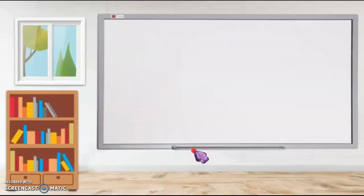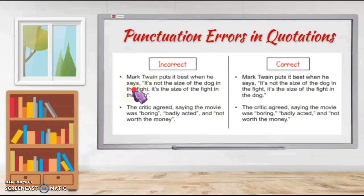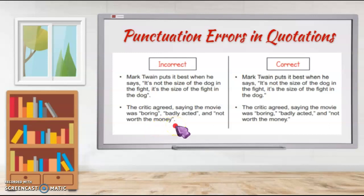Now let's look at some incorrect examples. Mark Twain puts it best when he says, 'It's not the size of the dog in the fight. It's the size of the fight in the dog.' Here we have the introductory phrase and the comma — that's right. But what's that period doing outside of the quotation marks? It needs to be inside. In another example, 'The critic agreed, saying the movie was boring, badly acted, and not worth the money.' That period also needs to go inside the quotation marks.